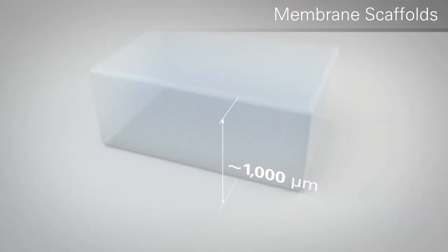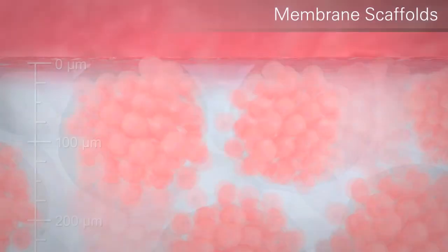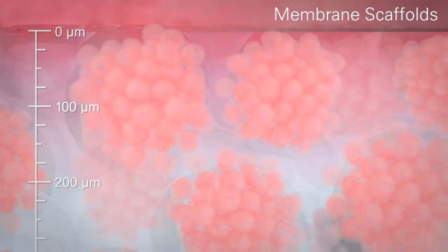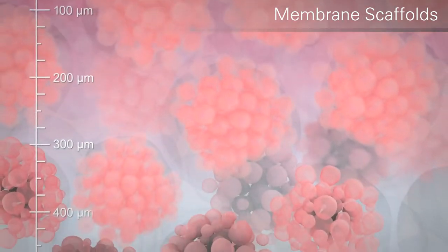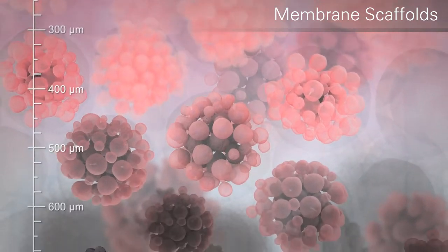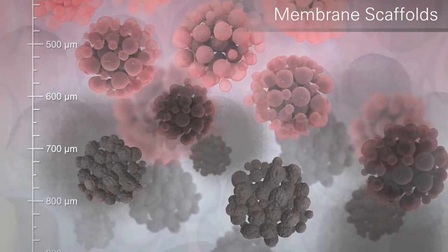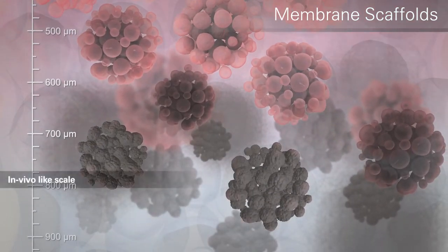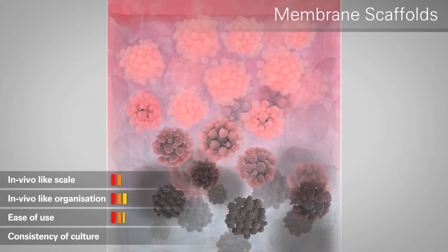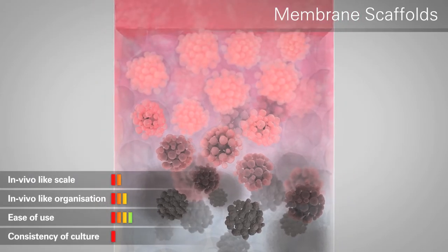The greater the depth the cells penetrate into the membrane, the further removed they are from the oxygen and nutrients in the media. This, together with the build-up of waste products unable to safely diffuse away, generates cell hypoxia and necrosis. However, hypoxia is not so much of an issue for cells in Alvatec's given its high porosity and unique 200 micron thickness.